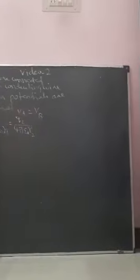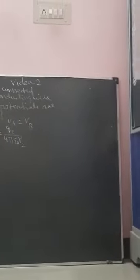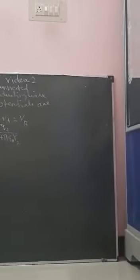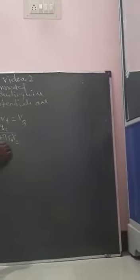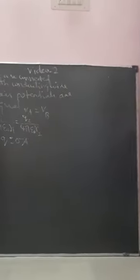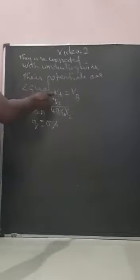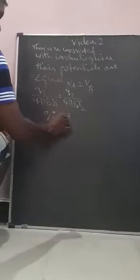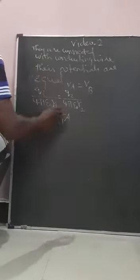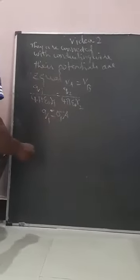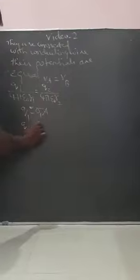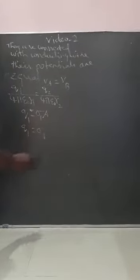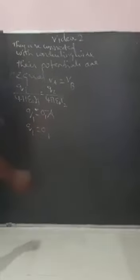According to Gauss's law, we have the equation Q is equal to sigma times A. So Q1 is equal to sigma 1 into area 1, where the area of a sphere is 4 pi r1 squared.